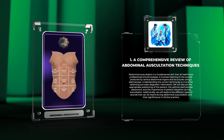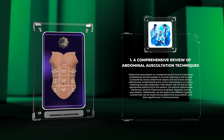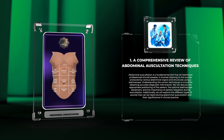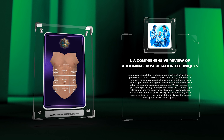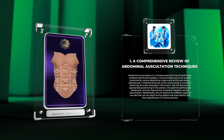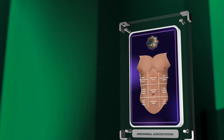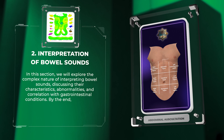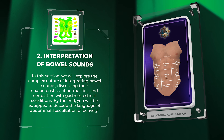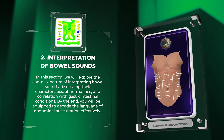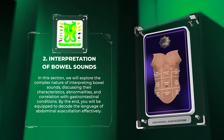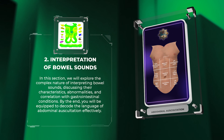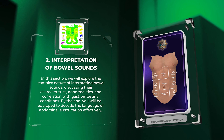Additionally, we will explore the different types of sounds that can be heard during abdominal auscultation and their significance in clinical practice. In this section, we will explore the complex nature of interpreting bowel sounds, discussing their characteristics, abnormalities, and correlation with gastrointestinal conditions.